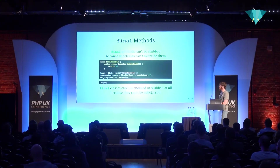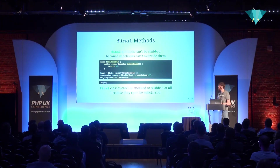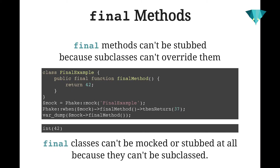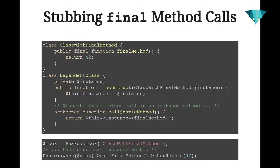Final methods are the last large problem with the mocking process. The final keyword prevents you from overriding methods, or in the case of classes, extending them. So you can't stub final methods and you can't mock or stub final classes. If you do attempt to stub a final method, the code will run but the behavior will not actually be changed — the original behavior will be invoked. The same workaround applies: wrap the final method call in an instance method of another class and stub that instance method. I just tend to prefer code that doesn't use final in general.